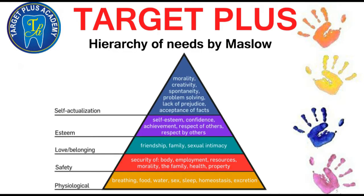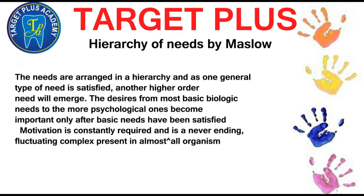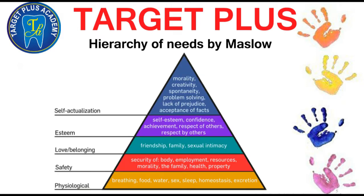Next theory is hierarchy of needs, given by Maslow. The needs are arranged in a hierarchy and as one general type of need is satisfied, another higher order need will emerge. The desire from most basic biological needs to more physiological ones become important only after basic needs have been satisfied. Motivation is constantly required and is never-ending, fluctuating, and complex, present in almost all organisms. It is difficult and impractical to apply on children in a dental setup.